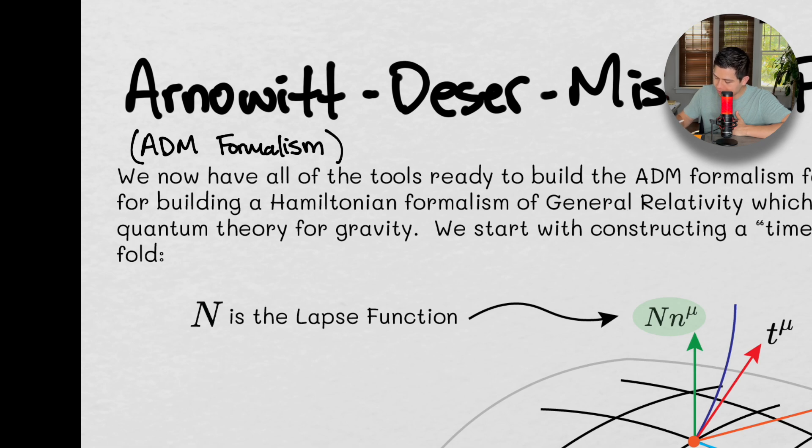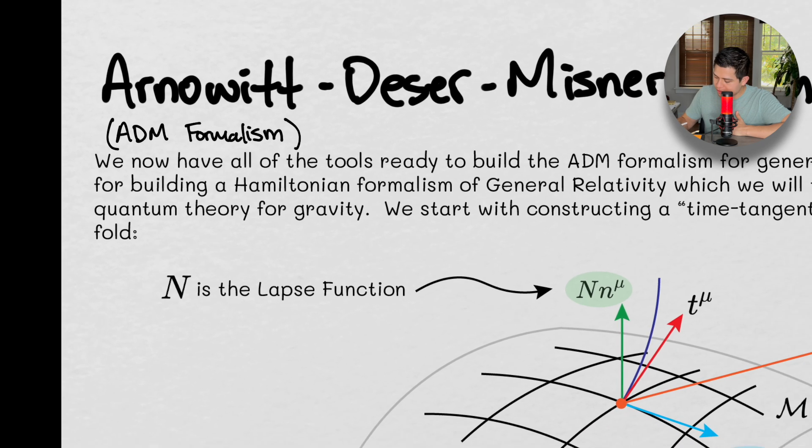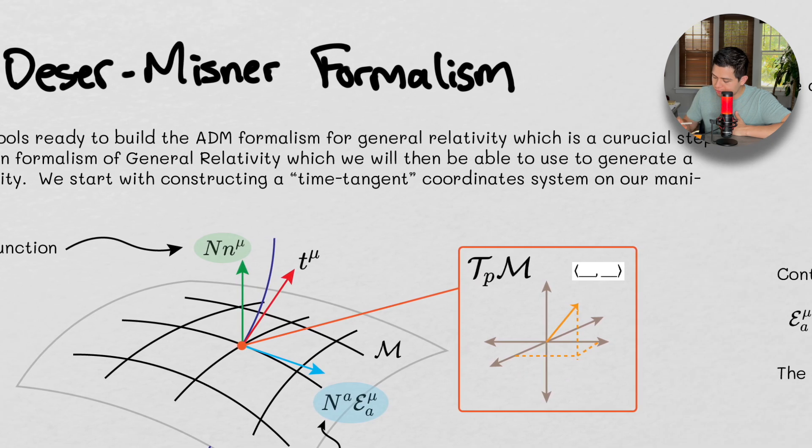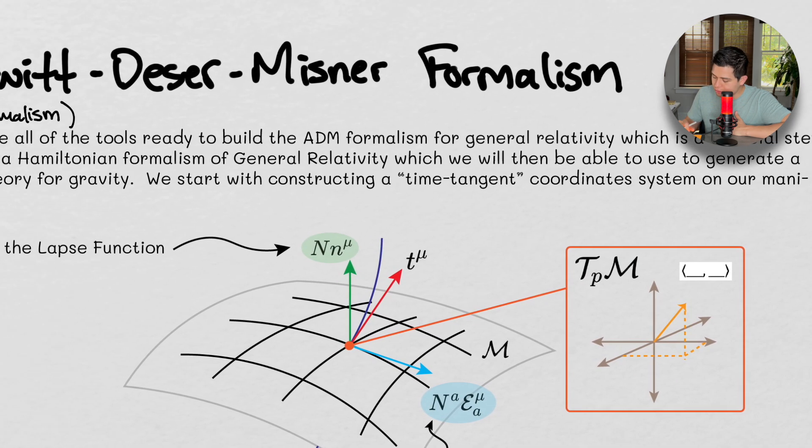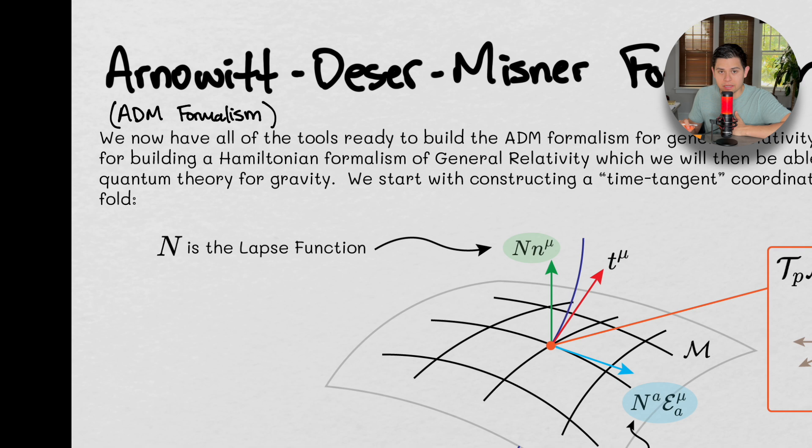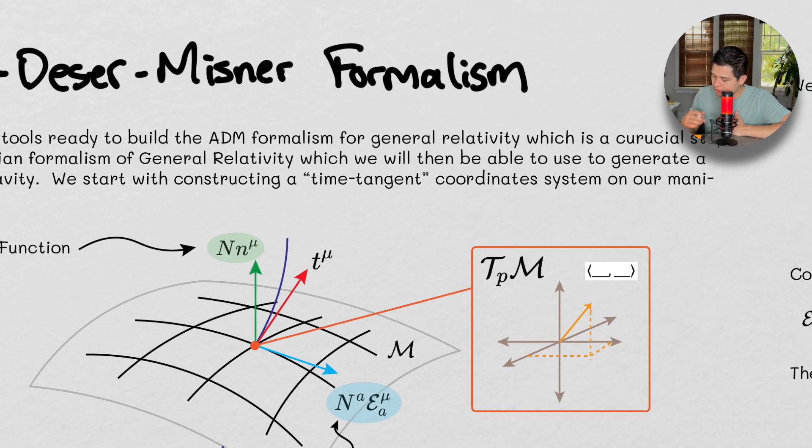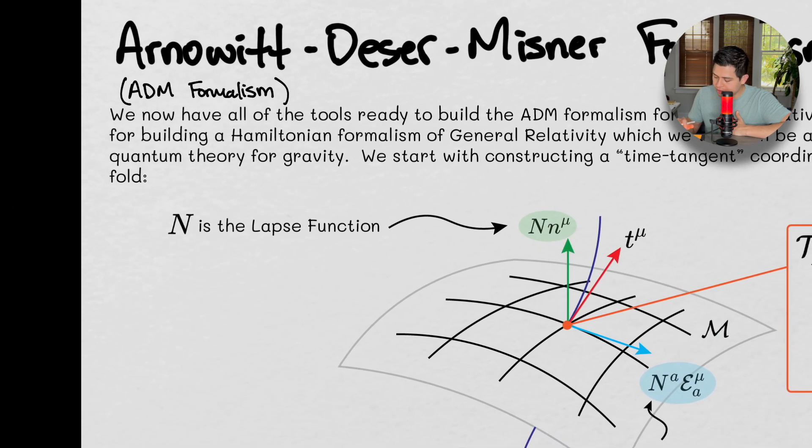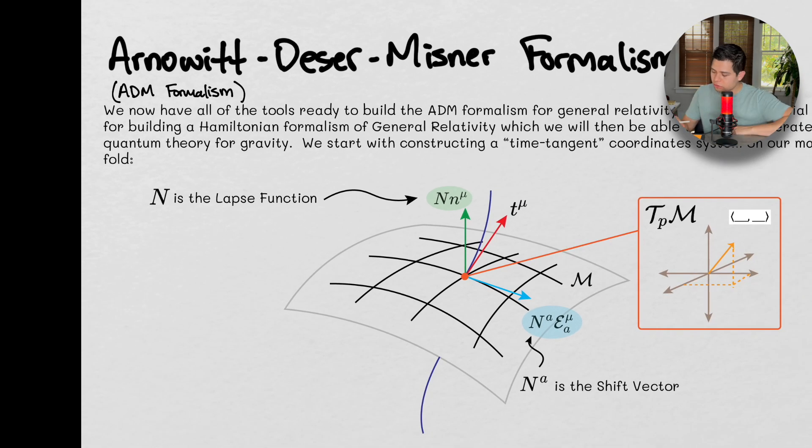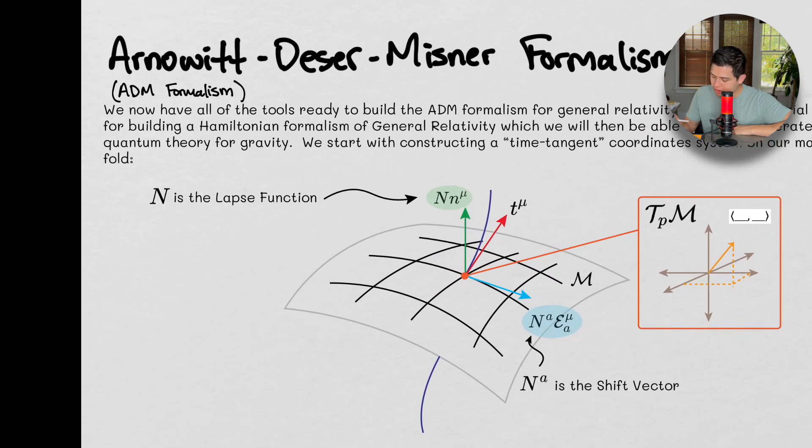Alright, so we now have all the tools ready to build this ADM formalism for general relativity, which is a crucial step for building a Hamiltonian for general relativity, which is what we're going to be able to use to generate a quantum theory for gravity. We start with constructing a time-tangent coordinate system on our manifold.